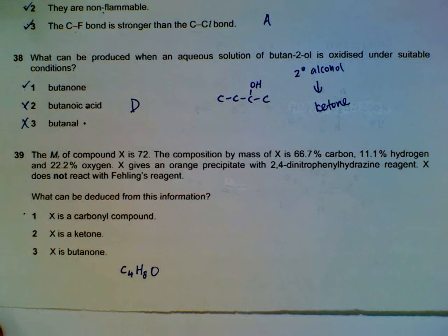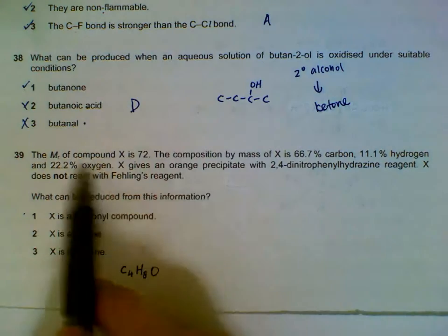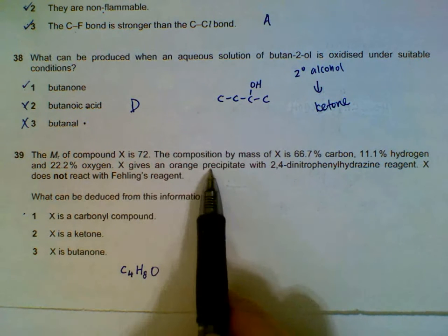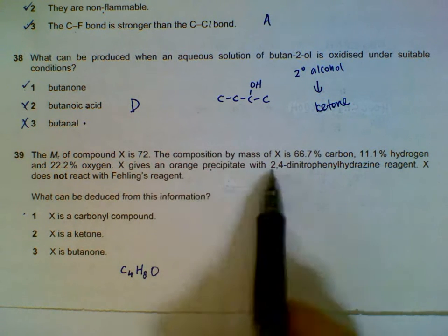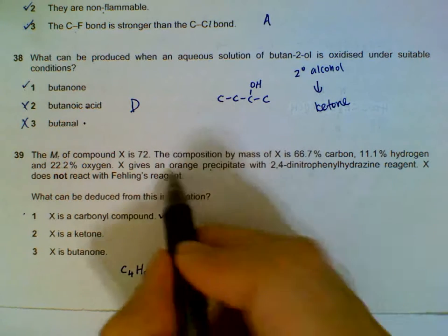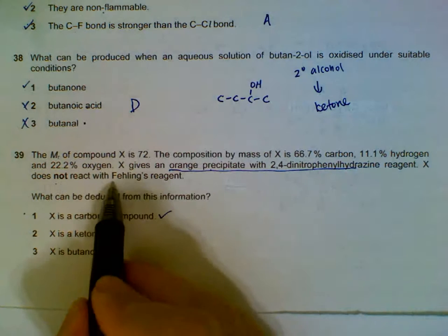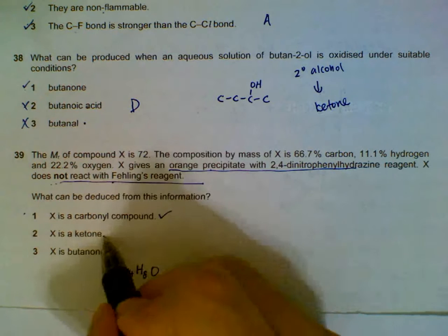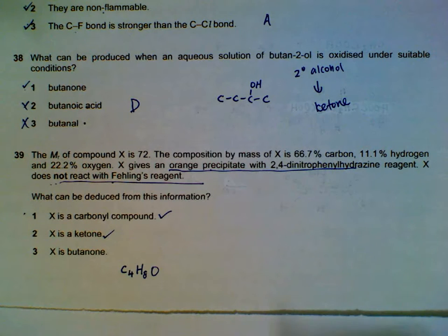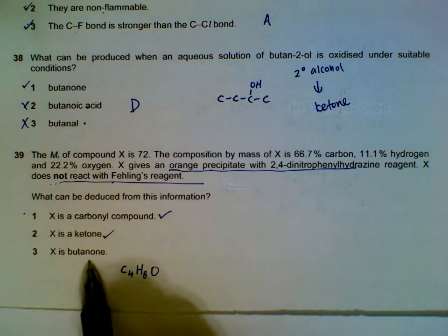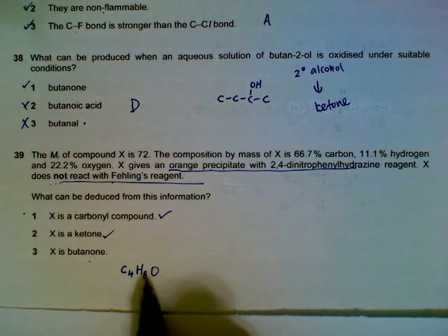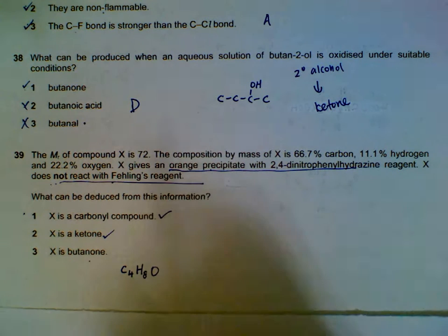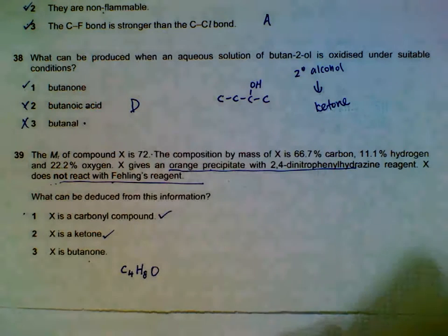Problem 39 seems to have more information than required, so we'll just deal with the more straightforward one. It gives an orange precipitate with 2,4-DNPH, so it is a carbonyl. But it does not react with Fehling's reagent, so it is not an aldehyde. It is a ketone. To check whether statement 3 is correct or not, you can write out the butanone formula: C4H8O.